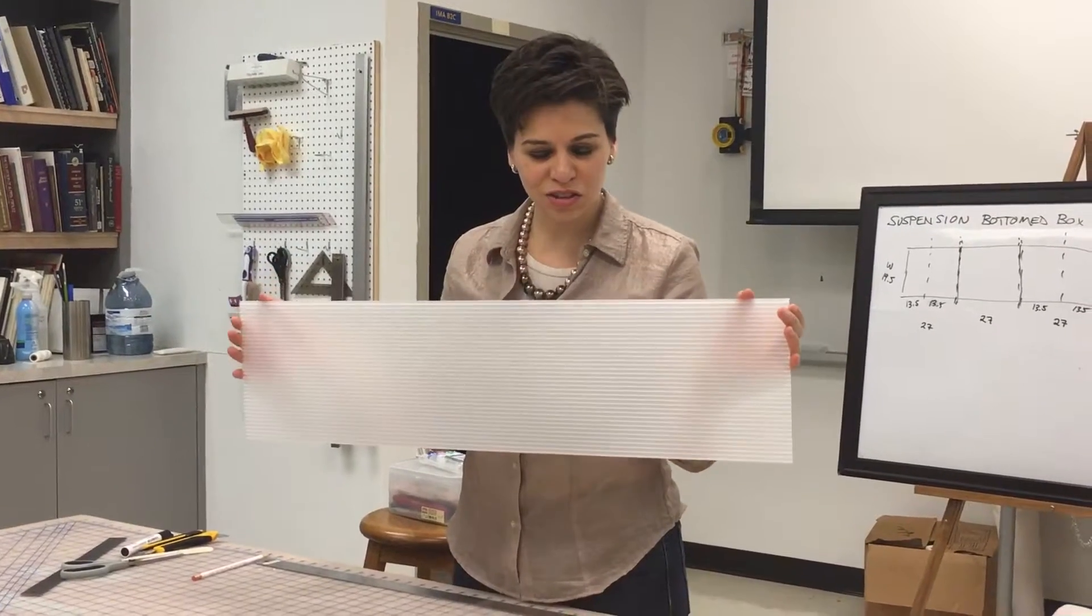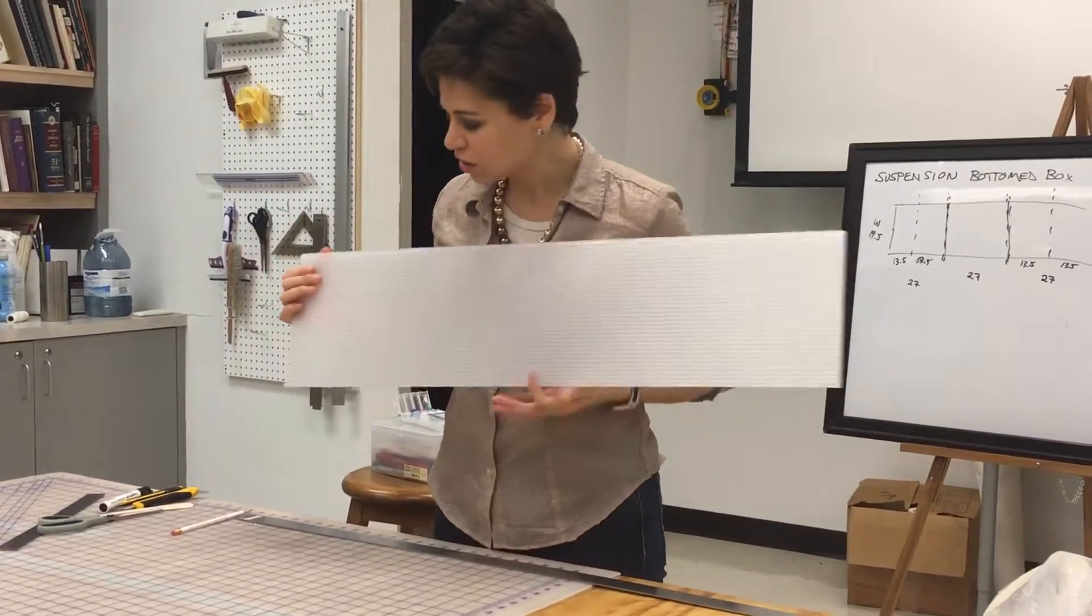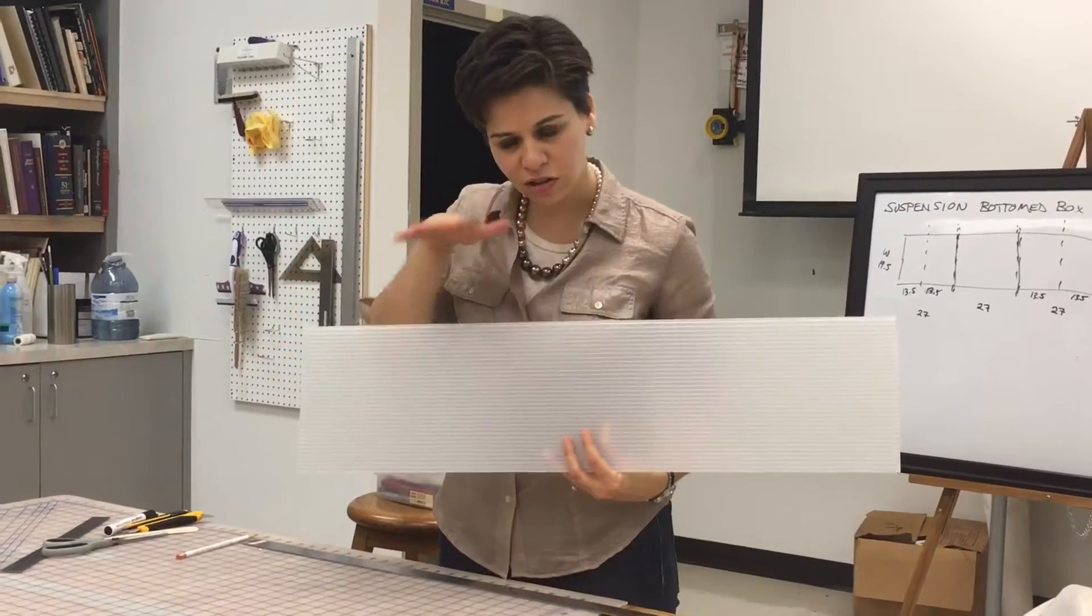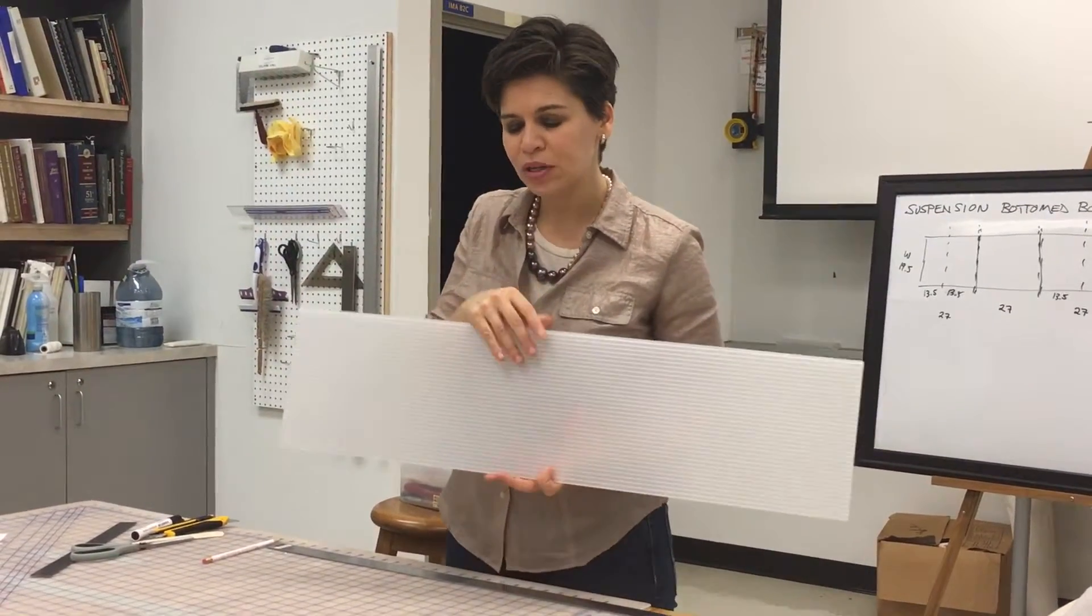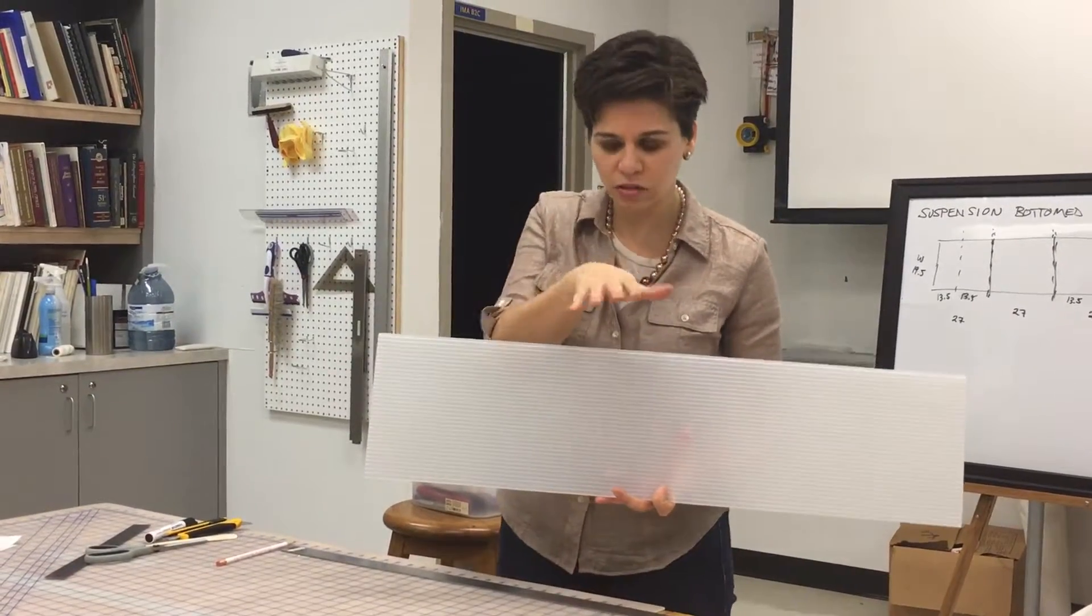We're going to be making a suspension bottom for our glass plate negative box. So as I've discussed earlier, we have a piece of board that essentially, when you measure the area that you need, it has to be a little bit bigger than your sink mat because we're going to build space around the box, which you'll see in another video.